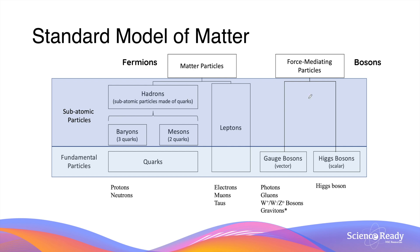Here is a simple way to visualize the standard model of matter. There are two groups of particles: fermions, which are particles that make up matter, and bosons, which are particles that mediate the fundamental forces. Within fermions we have quarks and leptons, and within bosons we have different types, each of which mediates a particular fundamental force.